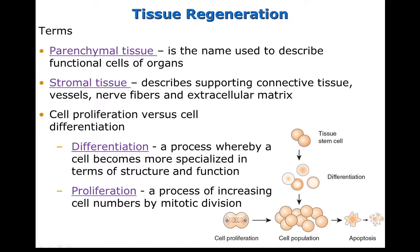In our discussion of cancer, we've already talked about differentiation and proliferation. Differentiation is the process whereby a cell becomes more specialized in terms of structure and function, and proliferation means the cell is able to increase in numbers through mitotic division.